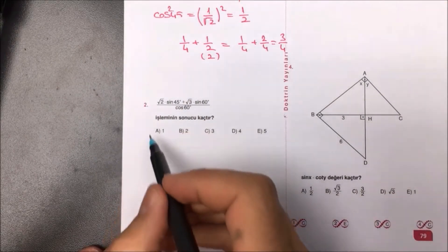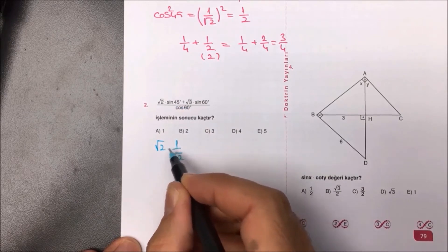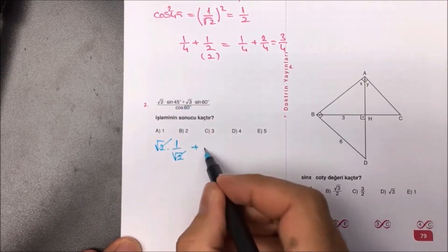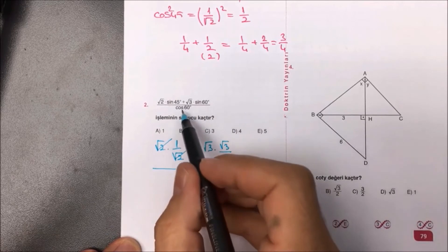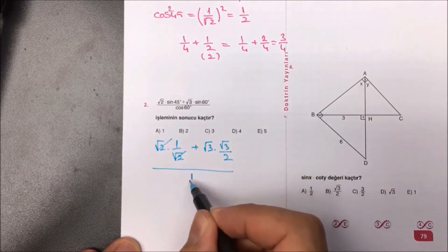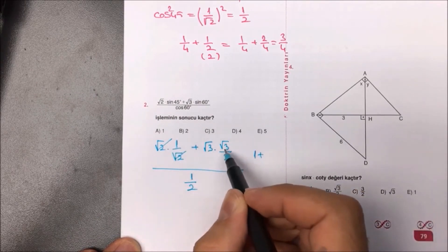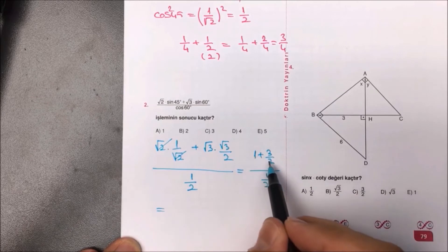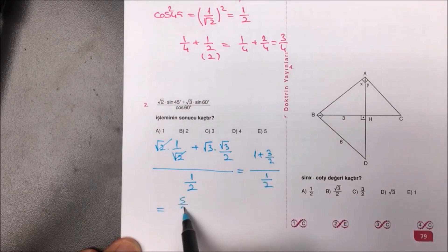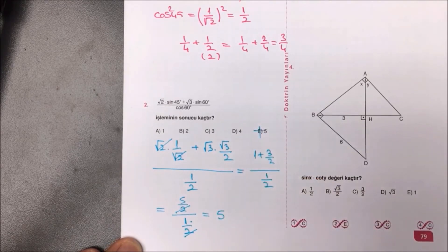İkinci soruda [√2·sin(45) + √3·sin(60)] / cos(60) var. √2·(1/√2) = 1; √3·(√3/2) = 3/2; toplamı 1 + 3/2 = 5/2. cos(60) = sin(30) = 1/2. (5/2)/(1/2) = 5. Aradığımız yanıt 5 olarak bulunur.